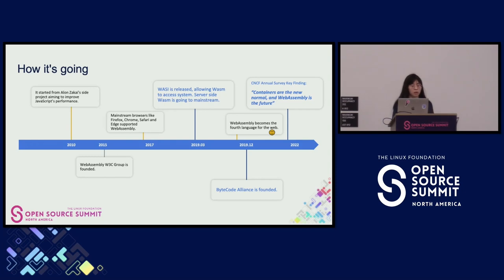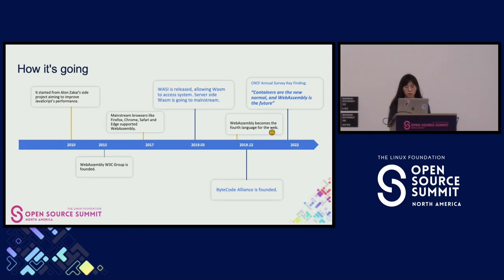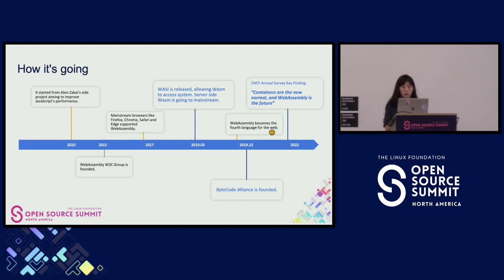That's when server-side WebAssembly started going mainstream. It was started with the pain point that people wanted to run high-performance applications inside the browser — compiling high-performance languages like C, C++, and later Rust into WebAssembly to run inside the browser, given that users' systems can be really different. But during this process we found it would also be big for the server side, much like how Java was first used in the browser and later migrated to the server side.